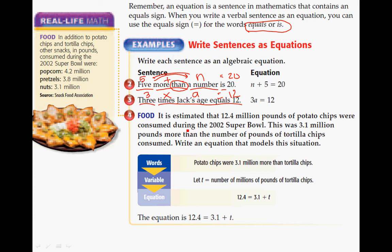Here's where you can use it in a word problem. If you read the word problem real quick, and just take out the important parts. Potato chips were 3.1 million more than tortilla chips. So, let T represent the number of millions of pounds of tortilla chips. And you get 12.4 equals 3.1 plus T. Again, we're not solving. We are just learning how to write sentences and equations. We're not trying to solve these.